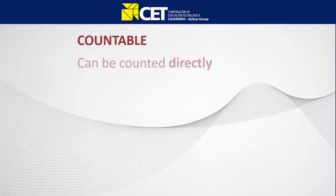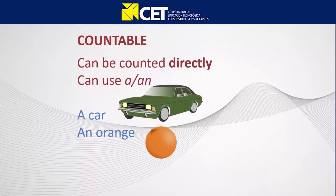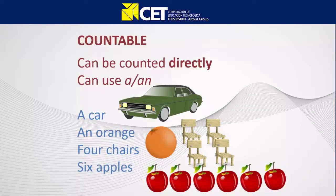Countable nouns can be counted directly and they can use a or an, as in a car, an orange. Remember that we use a with consonants and we use an with vowels. We can also count directly, as in four chairs or six apples.